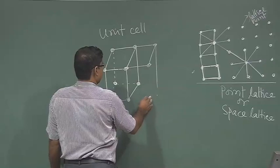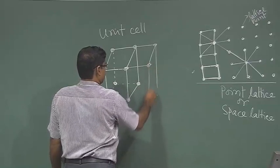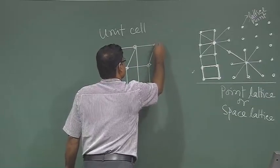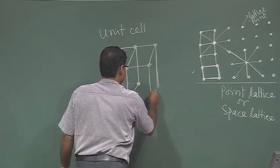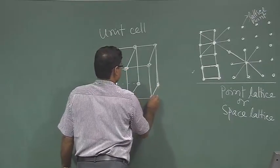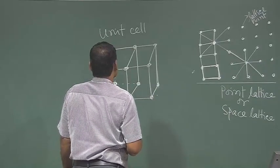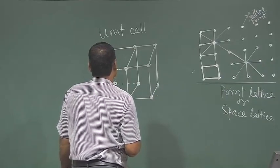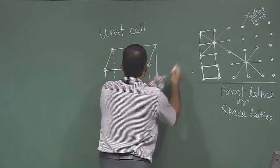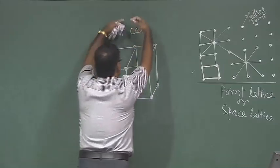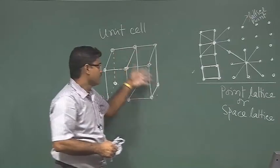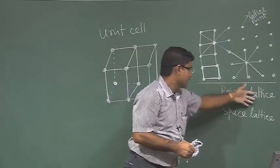One has to draw this properly. Just repeat in all directions and get the point lattice or space lattice.